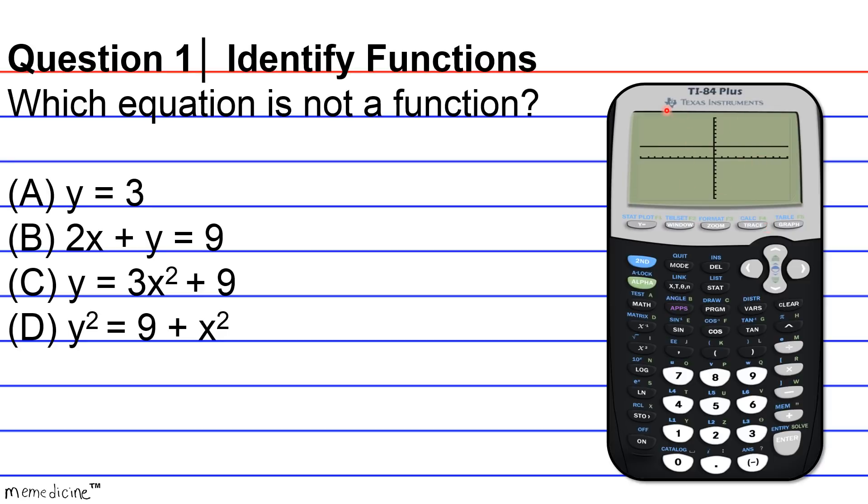Well, a horizontal line definitely will pass the vertical line test because the vertical line states that a vertical line can only intersect the graph of an equation once in order to deem whether or not it's a function, and yeah, there's only one intersection all along the way.